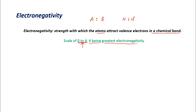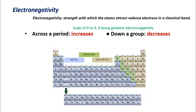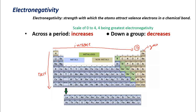The element with the highest electronegativity is fluorine. Electronegativity increases as you move across a period, but only up to the halogens (group 17), because noble gases have zero electronegativity — they have stable electron configurations and don't form bonds. As you go down the group, electronegativity decreases because size increases, making the attraction for shared electrons weaker.